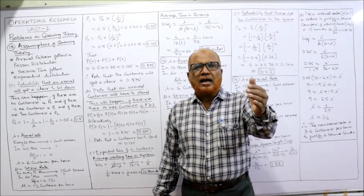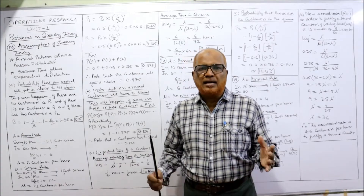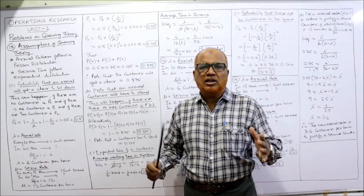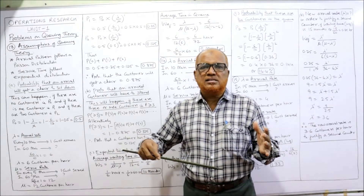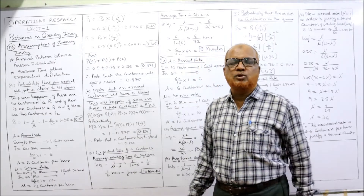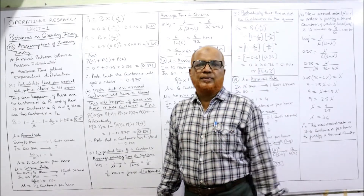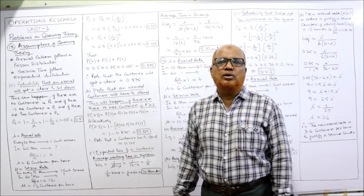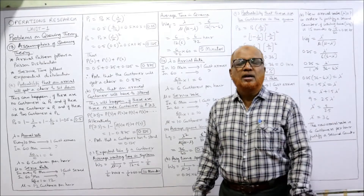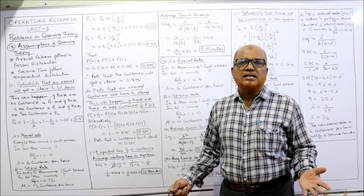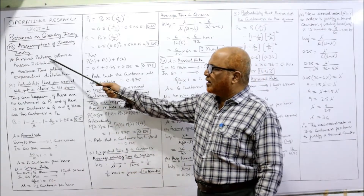First, state the assumptions of this queuing model. The first assumption: arrivals are assumed to follow a Poisson distribution. The second assumption: service is assumed to follow an exponential distribution. These are the basic assumptions of this queuing model.